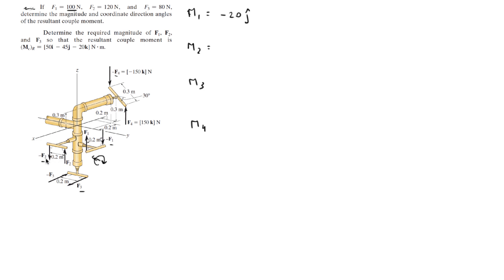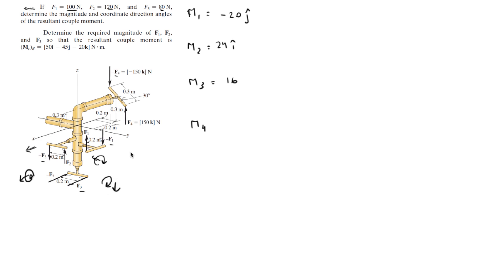Using the same logic, F2 gives 120 times 0.2, which is 24, and the direction is positive X, so that's 24 in the I direction — confirmed by the right-hand rule. Last but not least, F3 creates the third moment: 0.2 times 80 gives a magnitude of 16, and since it's going straight down, that's in the negative K direction.